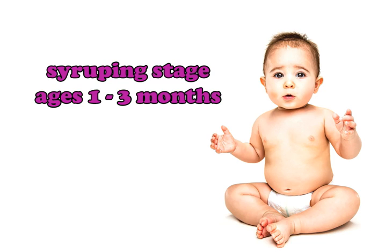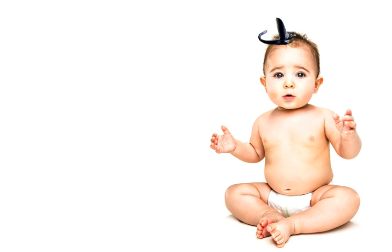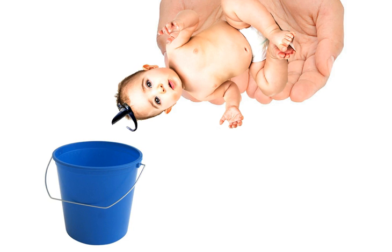The syruping stage is between the ages of one to three months. This is when you still have the soft spot on the head and parents must take it down to the syruping stations, in which case we make use of a device — the exact same thing that's used to take out the maple syrup, also known as a spile, in case you want to look that up. The spile is gently inserted into the baby's head and the baby is then suspended over a bucket for a certain amount of time, at which point we have plenty of time to extract the baby oil. And that's all there is to it.